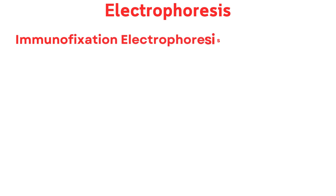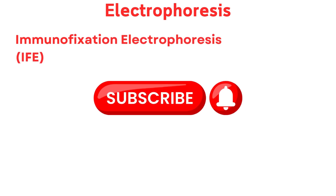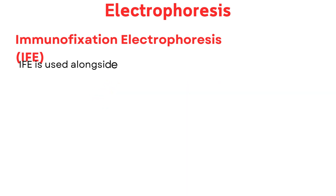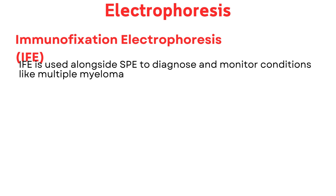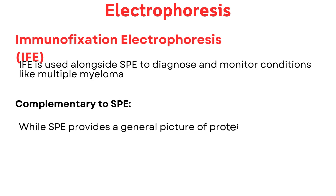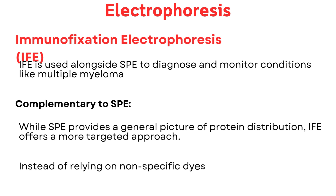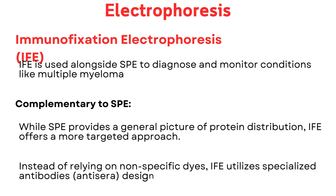Immunofixation electrophoresis (IFE): a closer look at abnormal proteins. IFE is a powerful technique used alongside serum protein electrophoresis (SPE) to diagnose and monitor conditions like multiple myeloma, which involve abnormal protein production. While SPE provides a general picture of protein distribution, IFE offers a more targeted approach — instead of relying on nonspecific dyes, IFE utilizes specialized antibodies (anti-sera) designed to detect specific proteins.